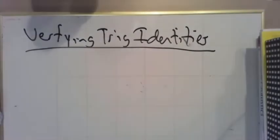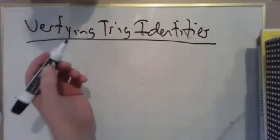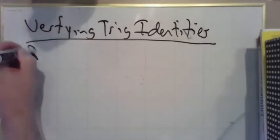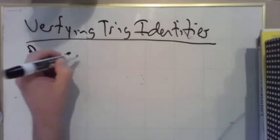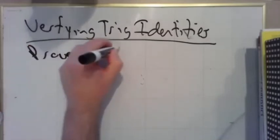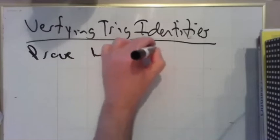These are very special kinds of problems. Mathematicians are very particular about how we want these done. So we'll be given some equation, we'll be told prove some left-hand side equals some right-hand side.